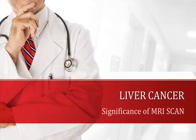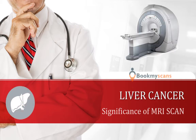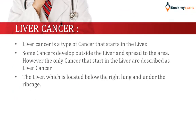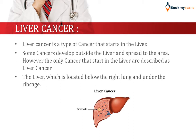Welcome to BookMyScans. Today let us get to know the significance of MRI scan for liver cancer. Liver cancer is a type of cancer that starts in the liver. Some cancers develop outside the liver and spread to the area; however, the only cancers that start in the liver are described as liver cancer. The liver is located below the right lung and under the ribcage.